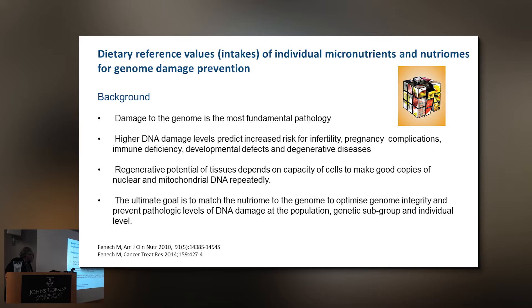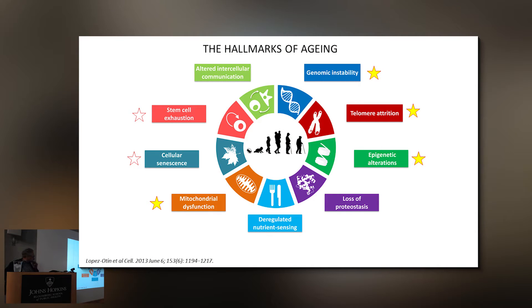The ultimate goal is to match the nutrient to the genome of individuals, genetic subgroups, or populations where the dietary pattern is restricted by food availability — to optimize genome integrity and prevent pathological levels of DNA damage. We always think of aging as something that happens after midlife, but we actually start aging from the very first cell division. As soon as genetic damage accumulates, you are already aging, as demonstrated by accelerated aging syndromes such as progeria.